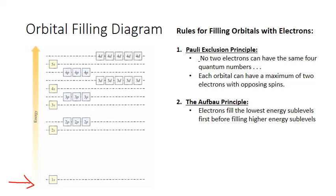Let's look at carbon as an example. Carbon has an atomic number of six, meaning six protons and six electrons in a neutral atom. We map carbon's electrons by filling six arrows into the orbital filling diagram, always starting at the bottom at the 1s. We fill it completely — two electrons spinning in opposite directions. Then we move to the 2s and put in electrons three and four.